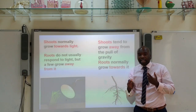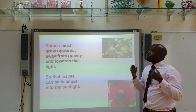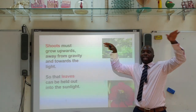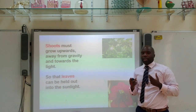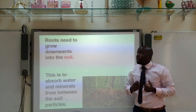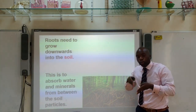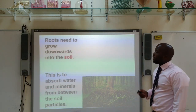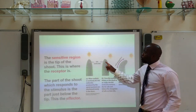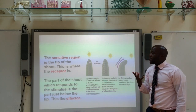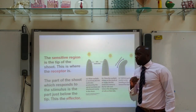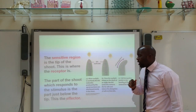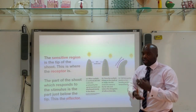Shoots must grow upwards against the pull of gravity so that the leaves can catch as much light as possible, since light is needed for photosynthesis. Roots must grow downwards towards the pull of gravity so that they can get into the soil and absorb as much water and minerals as possible. The sensitive region of the shoot is the tip, known as the receptor. The part just below the tip is what responds to the stimulus and is therefore the effector.